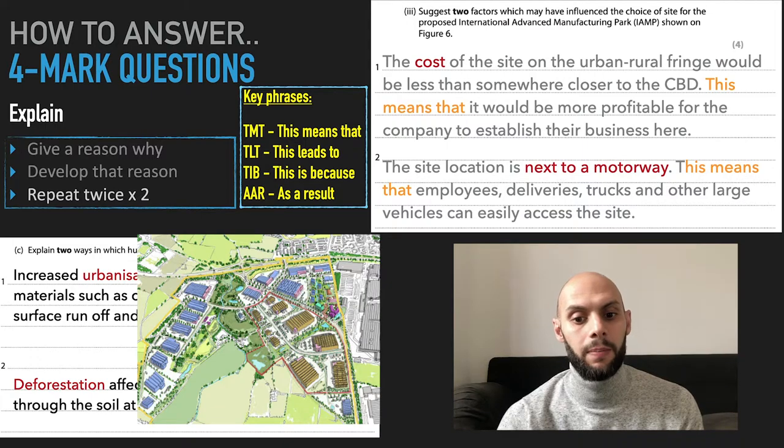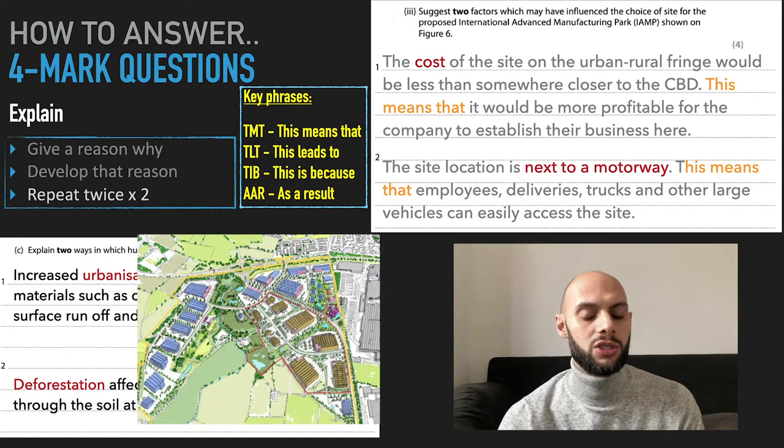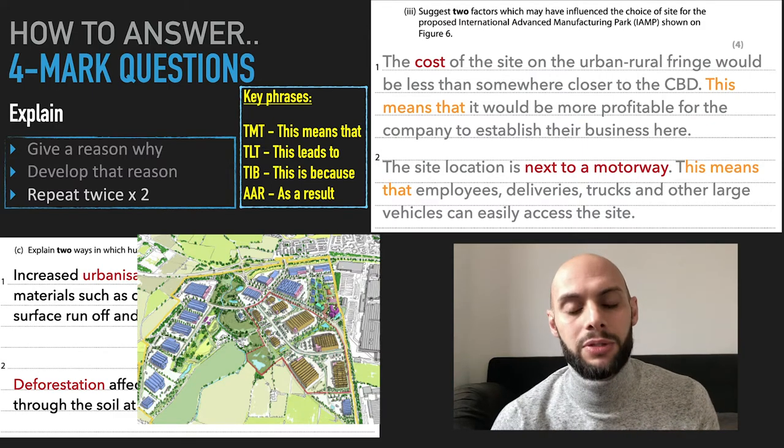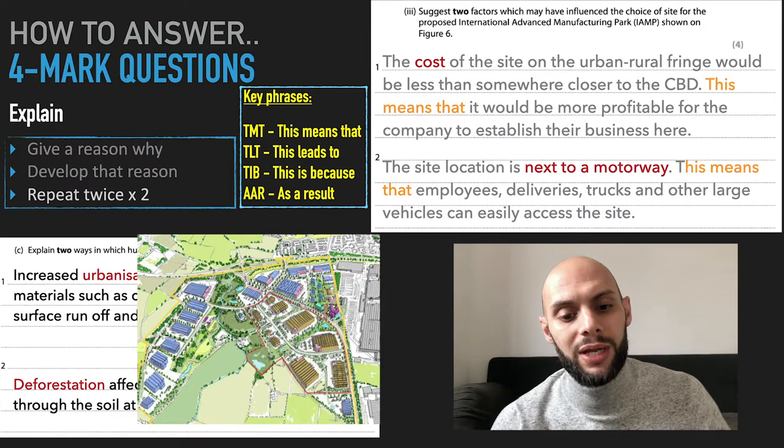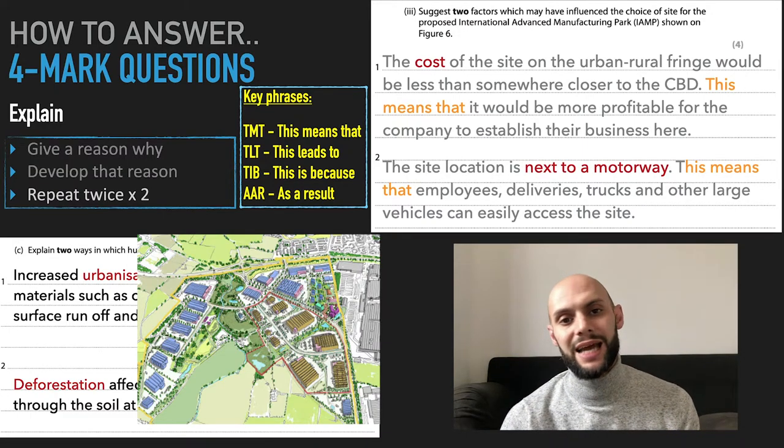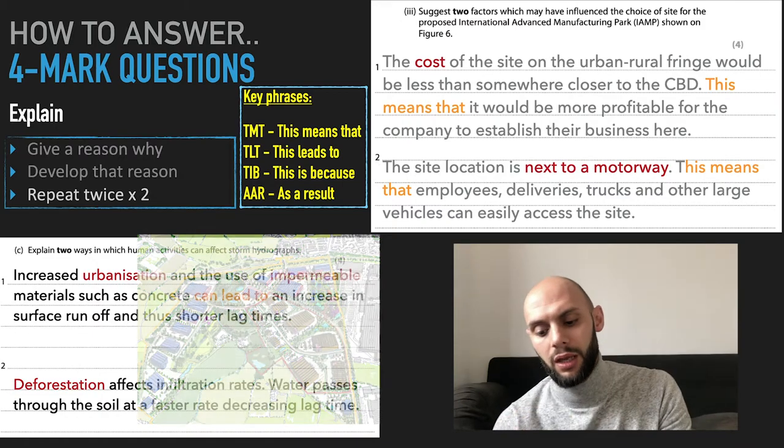The site is next to a motorway. You can't just assume that the examiner is going to know why that's a good thing. You need to spell it out, make it obvious. It's next to a motorway. This means that employees, deliveries, trucks and other large vehicles can easily access the site.